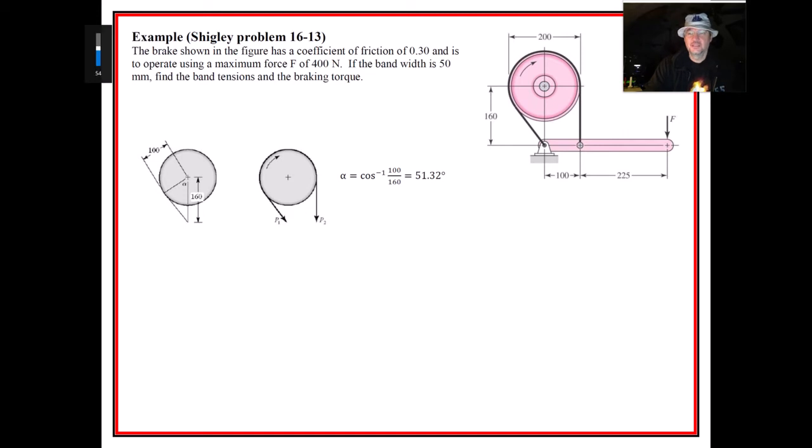Here is the free body diagram, or not quite a free body diagram, but you can see the numbering of the forces, the tensions in the bands. P1 is usually what we use for the larger of the two, and that's going to be determined by the rotation of this drum. It's rotating clockwise, so that means it's pulling on this left side band more. By pushing down here we increase the tension of this band.